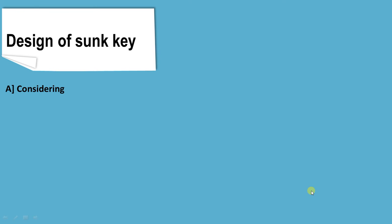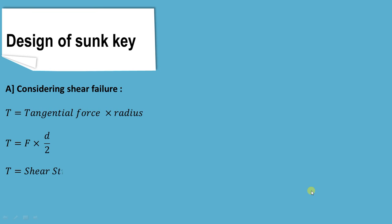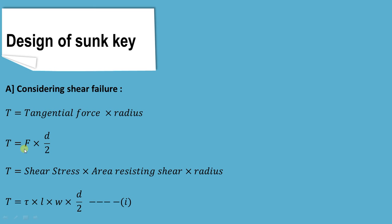First we consider the shear failure. Torque is tangential force into radius, which is F into D by 2. Force is stress into area, so considering shear failure it is shear stress into area resisting shear into radius. Shear stress is tau, area resisting shear is L into W, and radius is D by 2. So our first equation is: Torque = tau × L × W × (D/2).